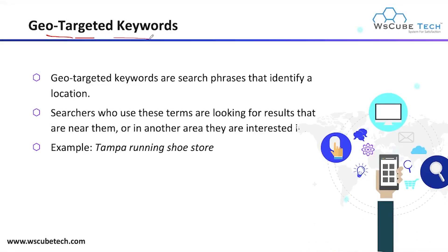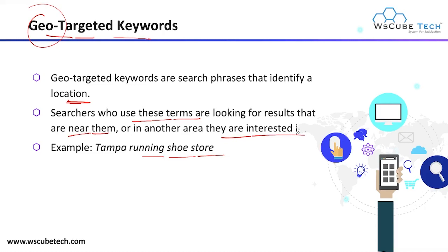Now we have geo-targeting keywords. Here 'geo' stands for geographical location. Geo-targeted keywords are search phrases that identify a location — they are based on location. For example, if you are searching for information in your particular area, you mention the area name in the keyword. Examples: 'running shoes store Tampa,' 'running shoes store Delhi,' or 'running shoes store Mumbai.' Searchers using these terms are looking for results near them or in an area they are interested in.